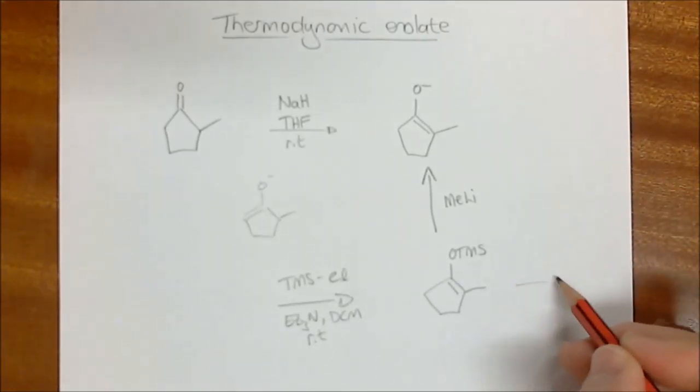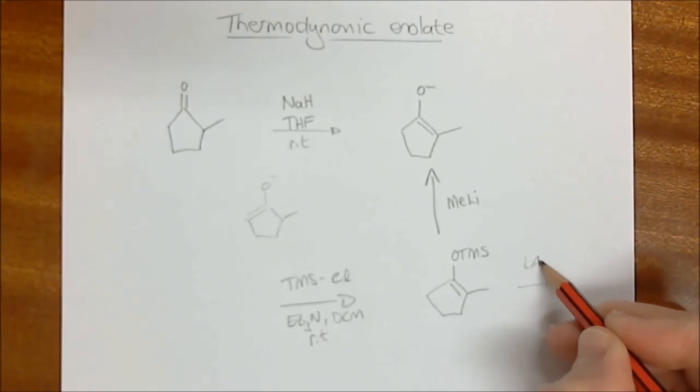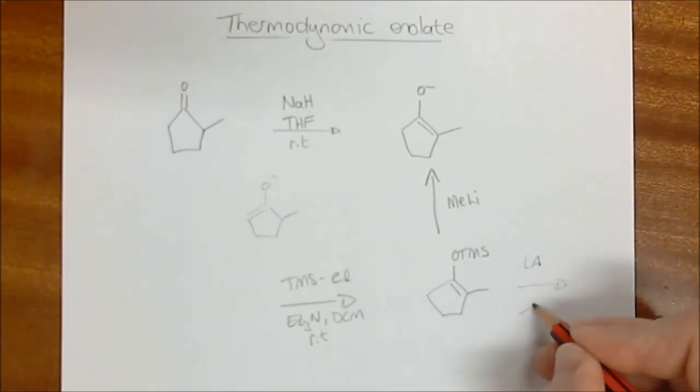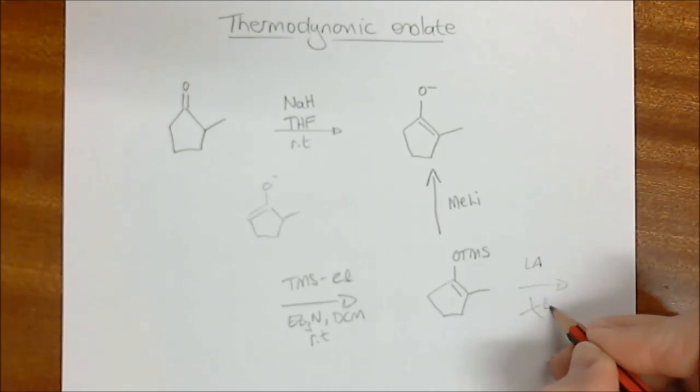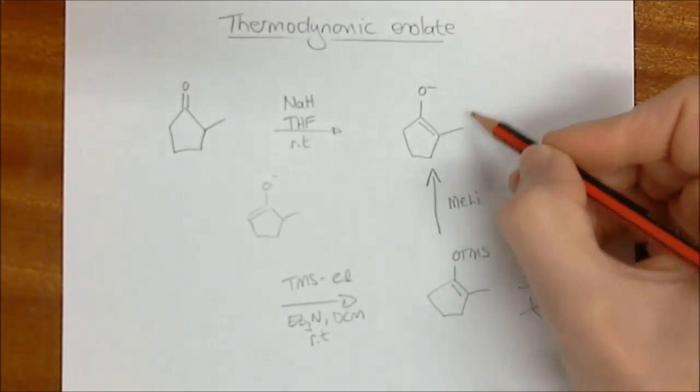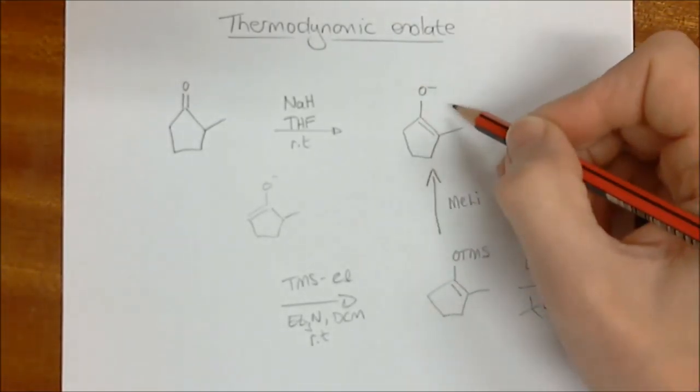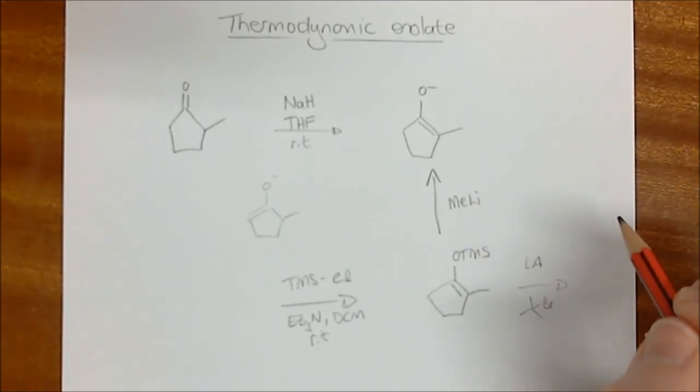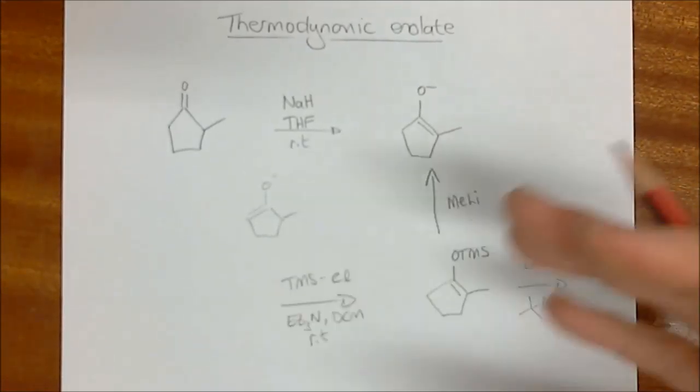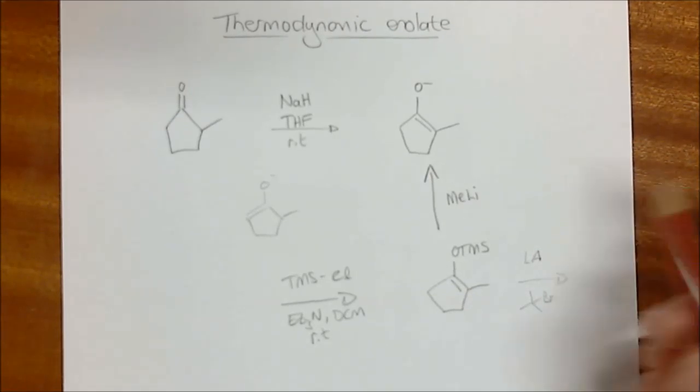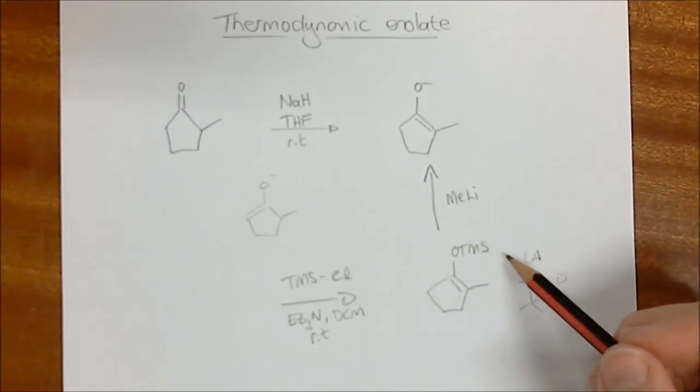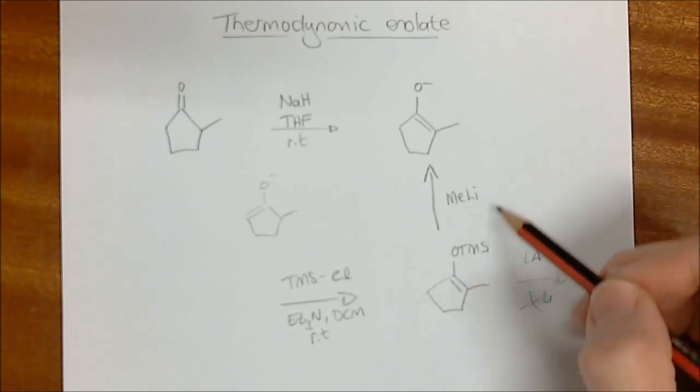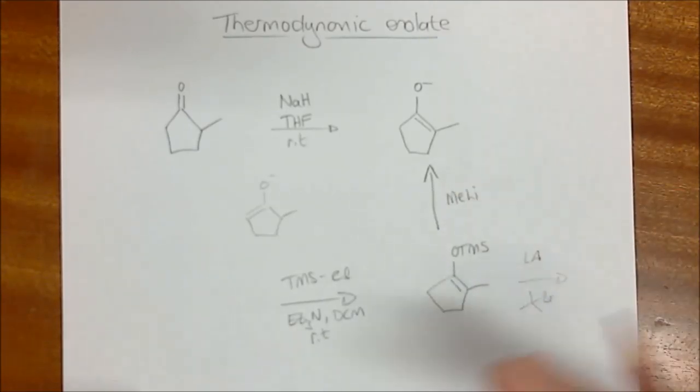So we can use silyl enol ethers with Lewis acids. So we add a Lewis acid and we add our alkylating agent, whatever it might be, maybe it's a tertiary alkylating agent like that. But if we want to use an enolate specifically, we can generate that by adding methyl iodide. It's just another way of using the silyl enol ethers. So don't see it as like this is the only way of doing it. We're just improving and expanding on the toolbox of things that you are being exposed to.